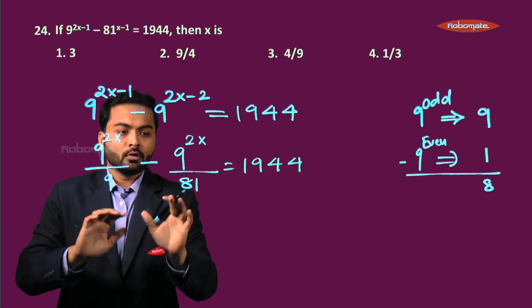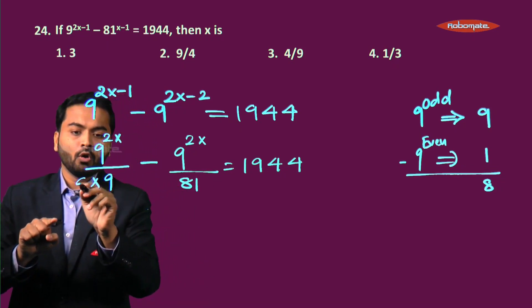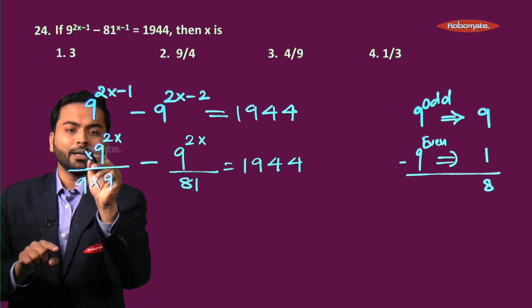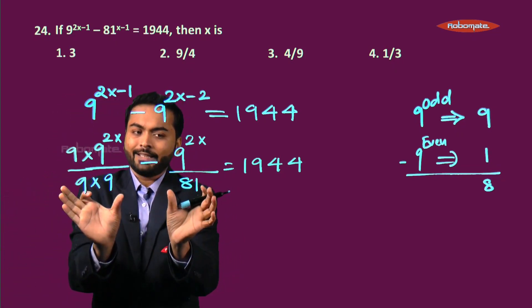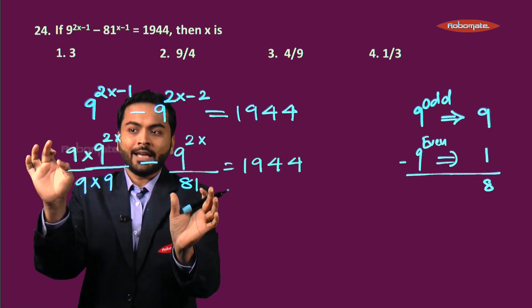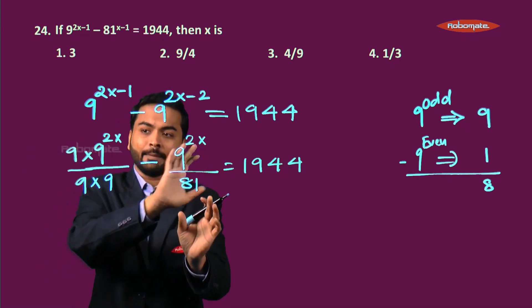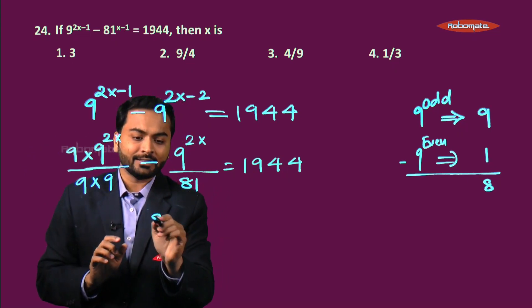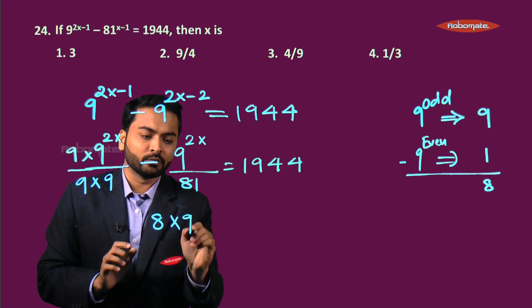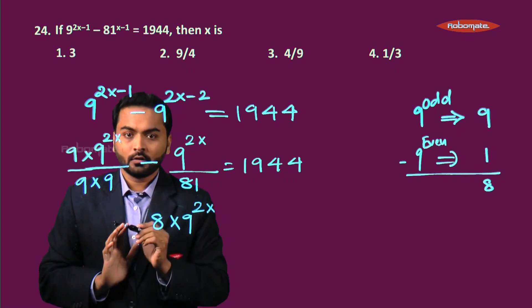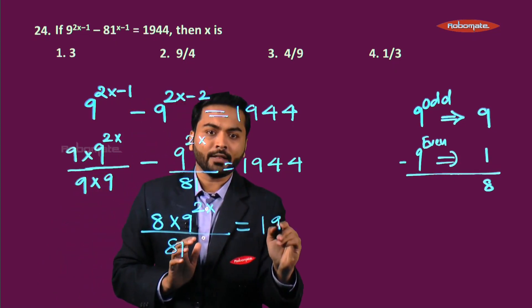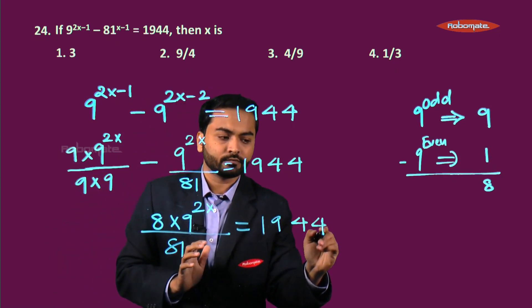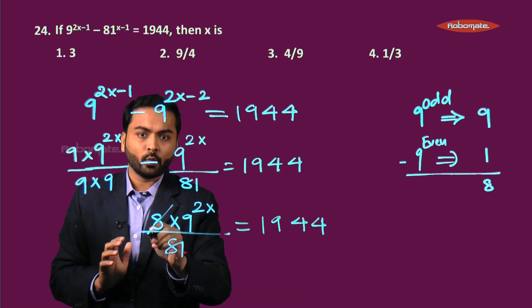Now let us make the denominator constant. So I will multiply numerator and denominator by 9. So now I can say this is 81. 9 into something minus the same value something. I can say it is 8 into that something upon 81, and this equals 1944.